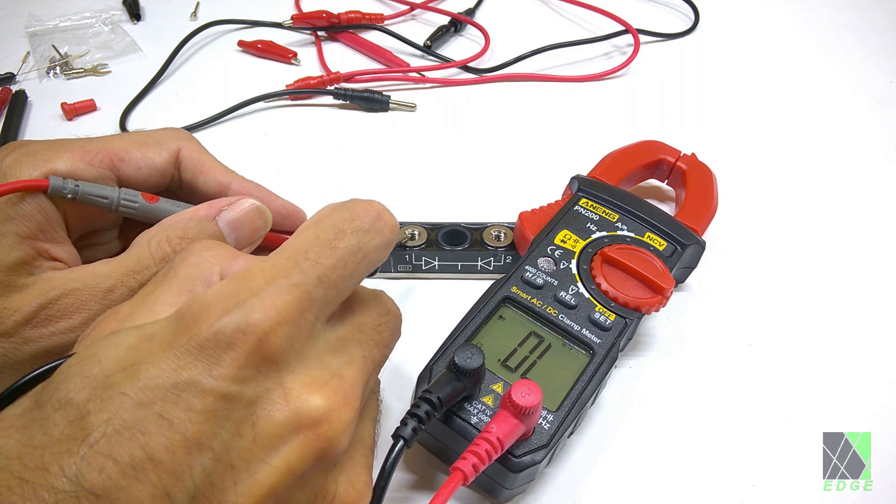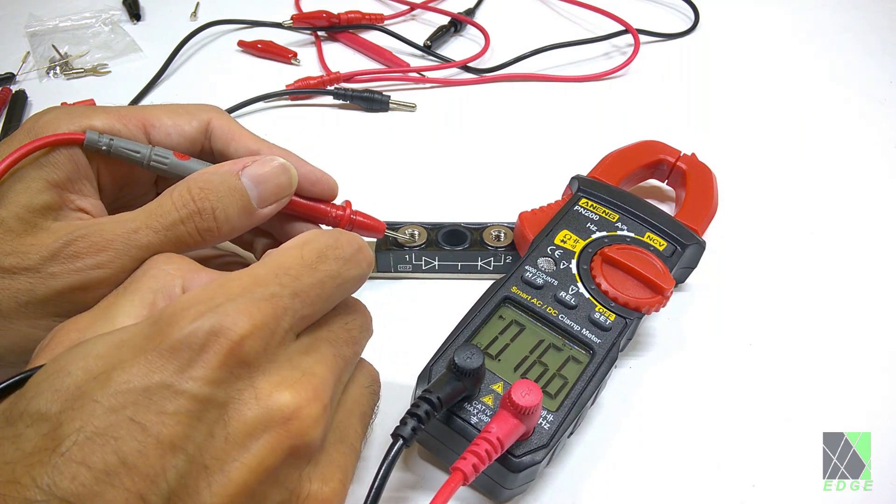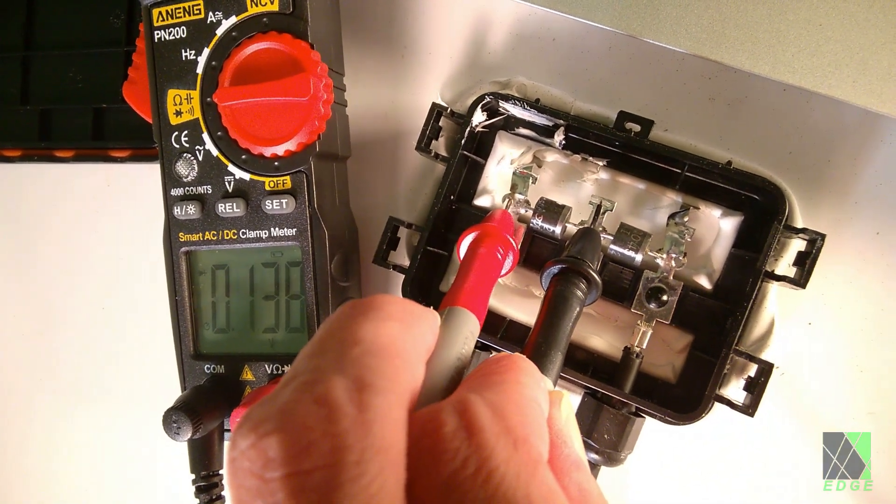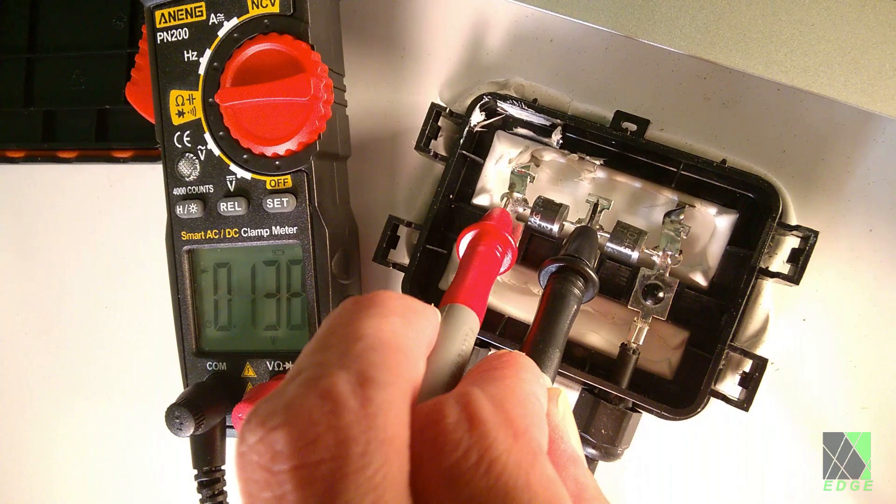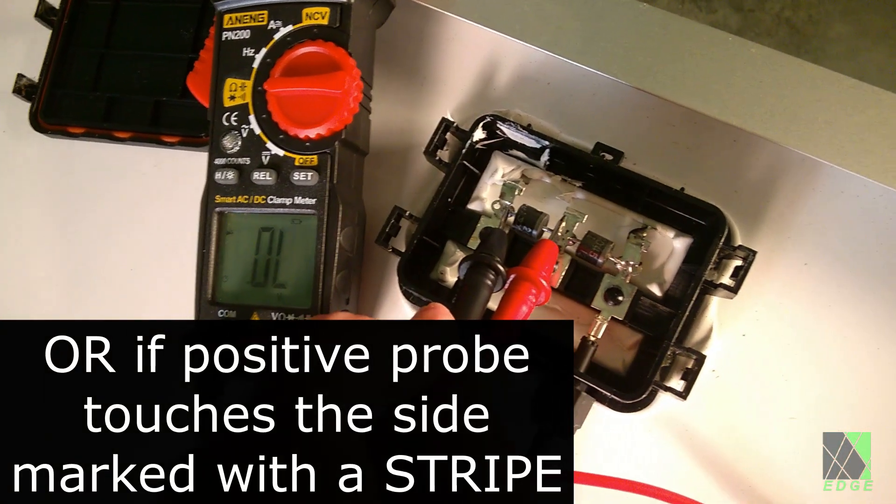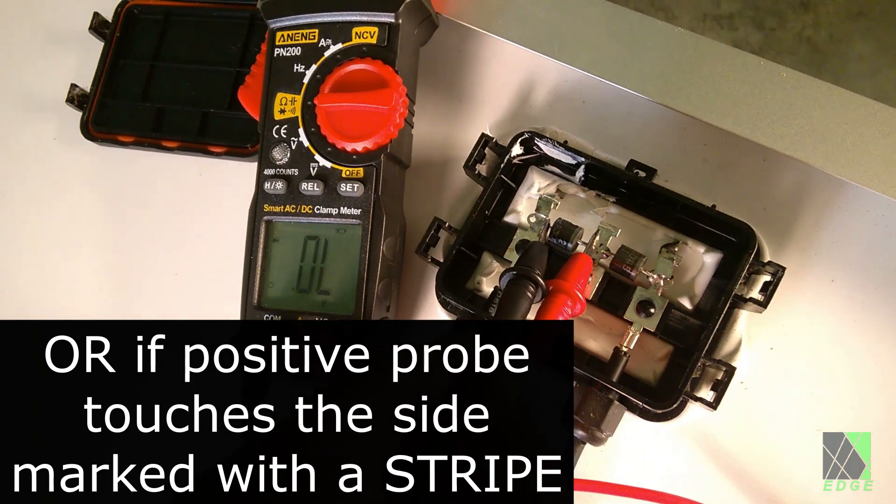Diode check. This mode can be used to see if a diode has shorted out or what the voltage drop is. A Schottky diode drops around 0.2 volts and a silicon rectifier diode drops about 0.5 volts. It should read open circuit when the positive probe is touching the terminal that the arrow symbol points towards.